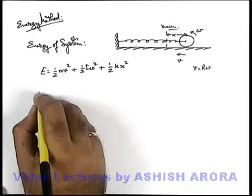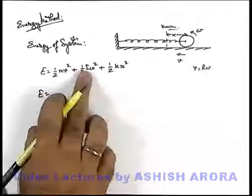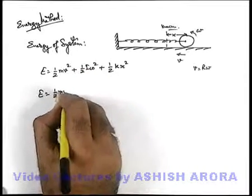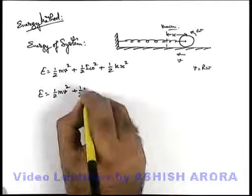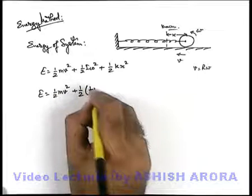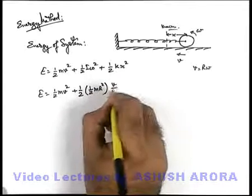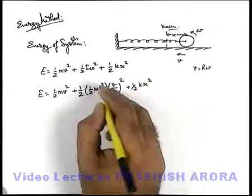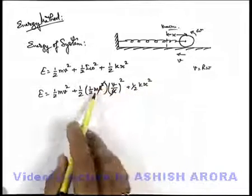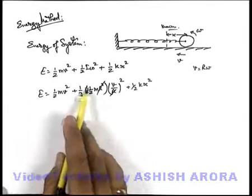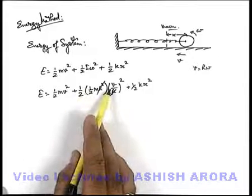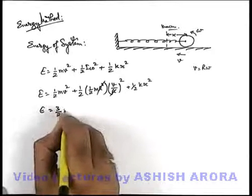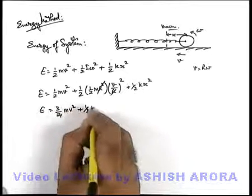If we just find out the energy by substituting the moment of inertia and angular speed, it can be given as half m v square plus half, moment of inertia of cylinder can be taken as half m r square, angular speed as v by r, plus half k x square. In this situation this r gets cancelled out and half m v square plus 1 by 4 m v square will be 3 by 4 m v square. Energy we can write as 3 by 4 m v square plus half k x square.